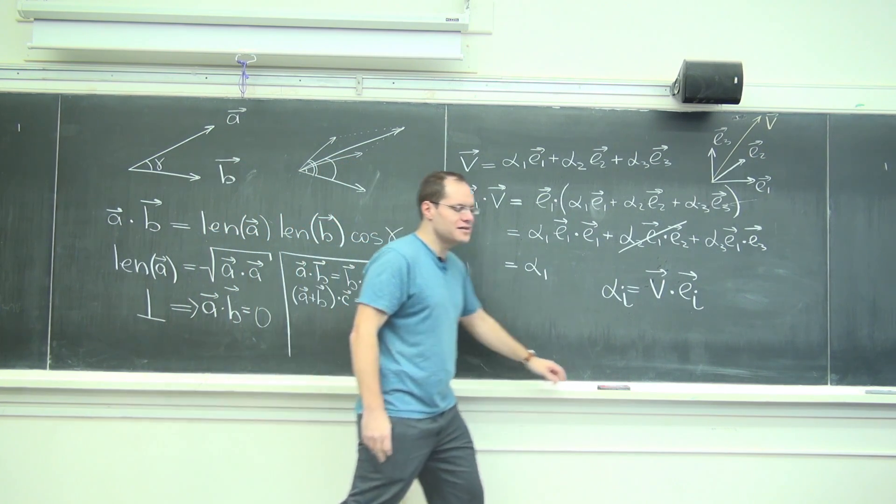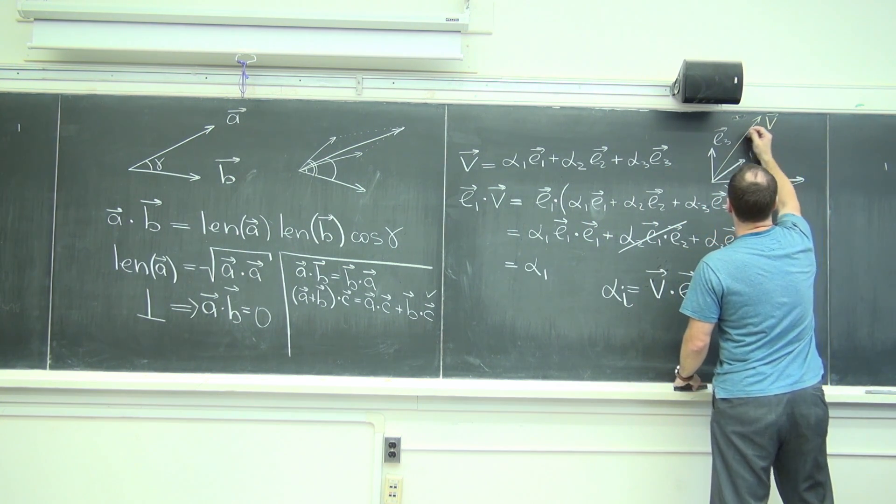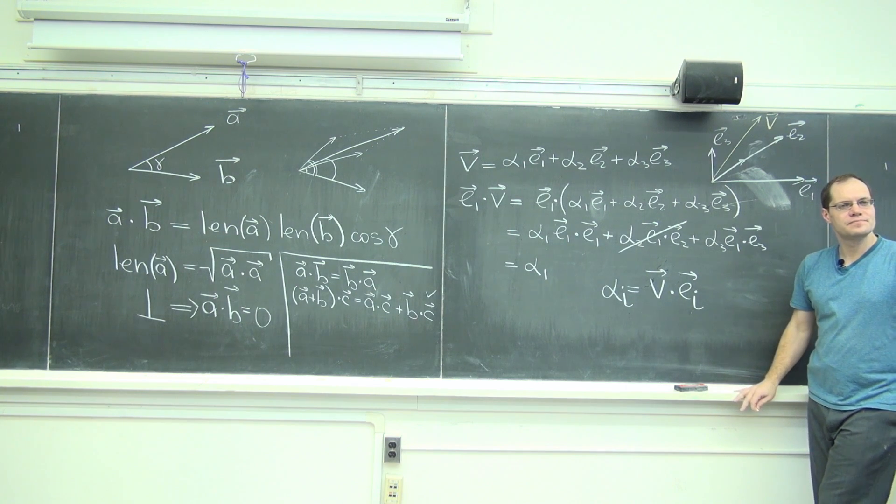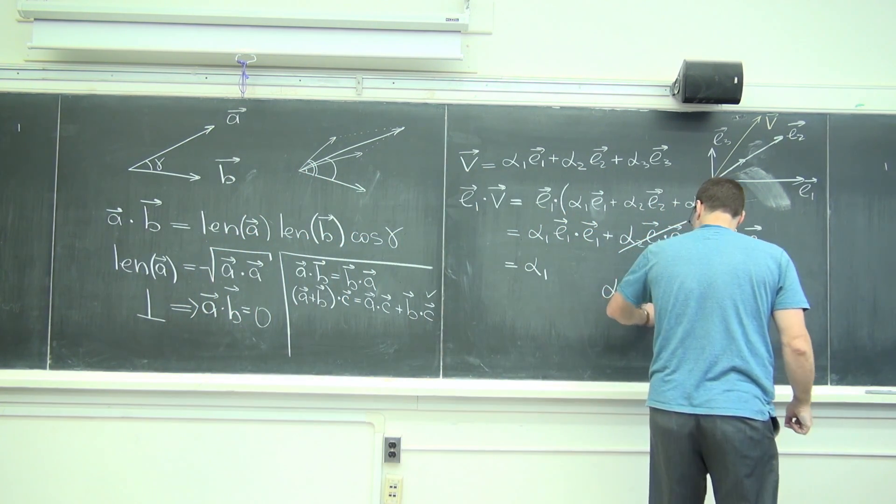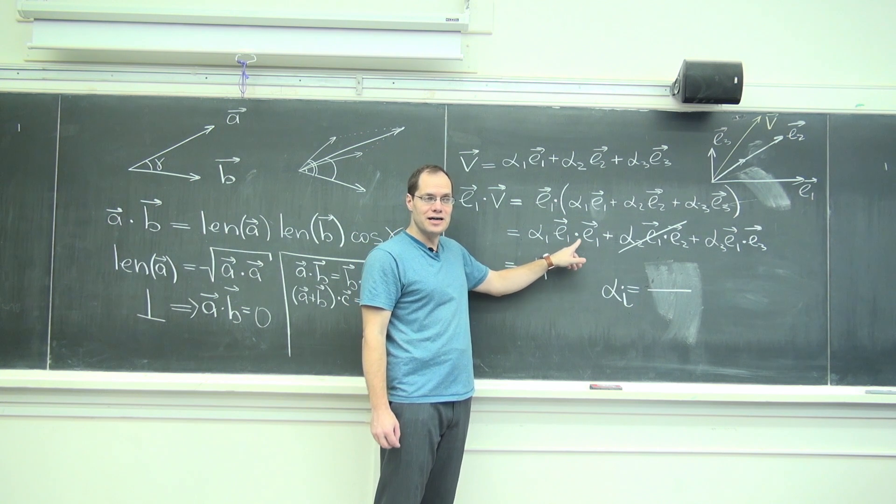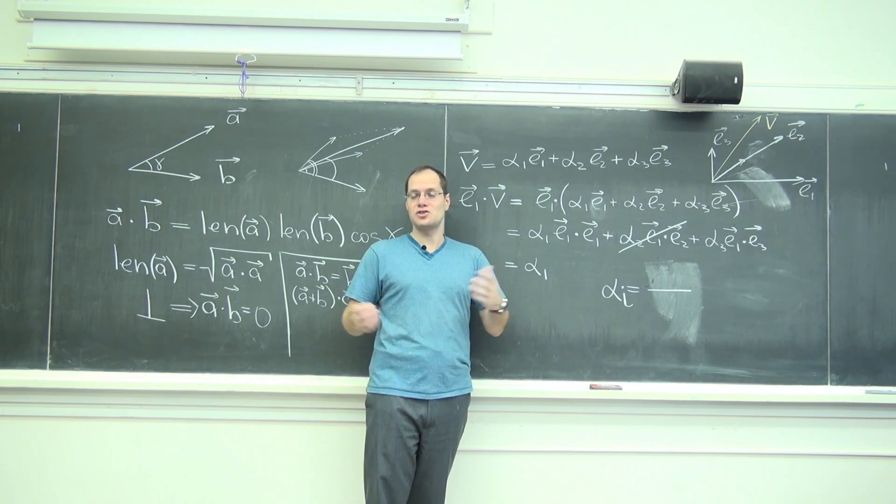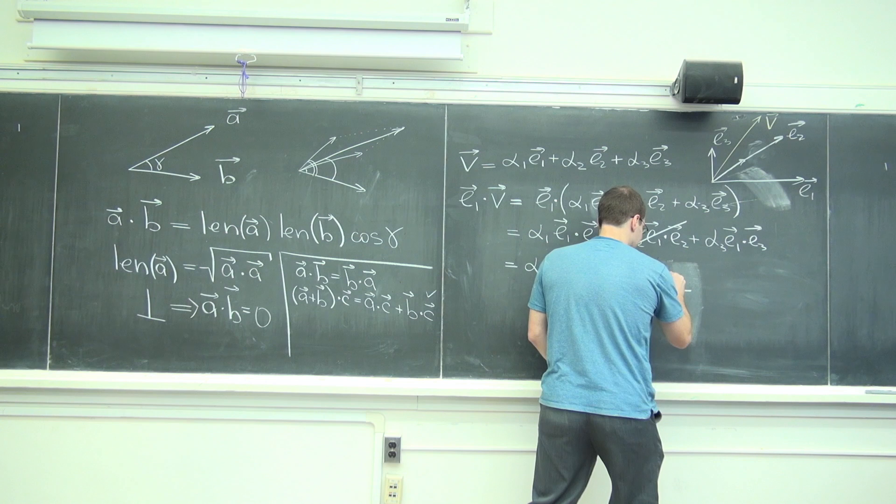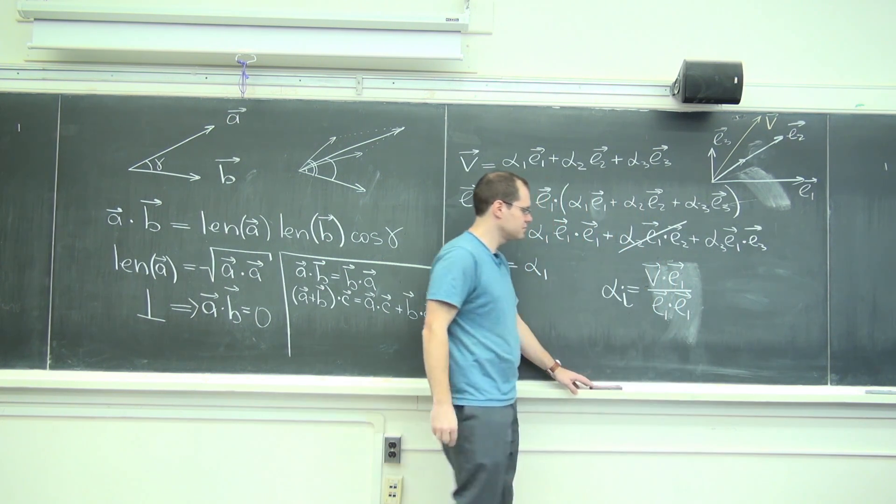Let's generalize this a little bit. What if this basis was still orthogonal but no longer orthonormal? It's no longer orthonormal. Still orthogonal but they're no longer length one. Does the concept still work? Yes. The only correction will look like this. I will just have to divide. Instead of saying that E1 dotted with E1 is one, now E1 dotted with E1 is E1 dotted with E1. You'll just say that it's V dotted with E1 divided by E1 dotted with E1.